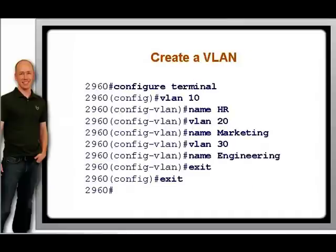The commands to create a VLAN vary depending on the switch model and iOS version. We stick with the Catalyst 2960, using an iOS later than 12.1 as our example. These commands are entered starting at the global config prompt.